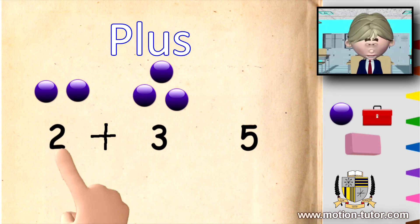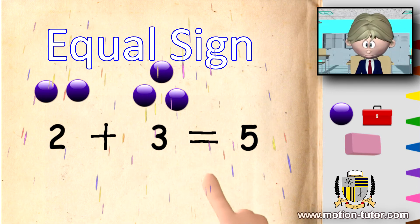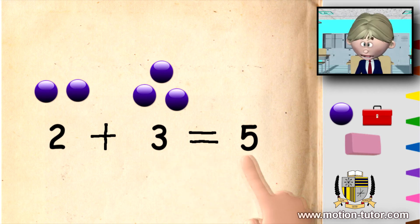So it's two plus three. And here is the equal sign. Two plus three equal to five.